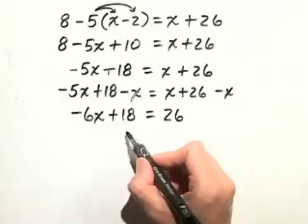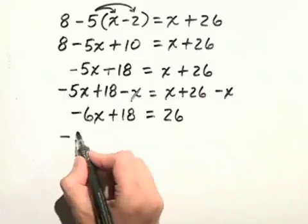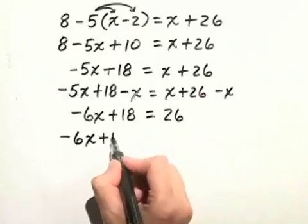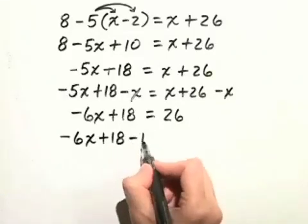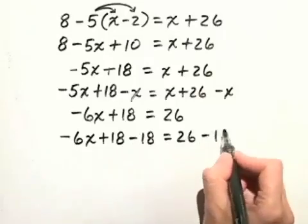Next we'll subtract 18 from both sides of this equation to get the constants on the right hand side. So we have negative 6x plus 18, minus 18, equals 26 minus 18.